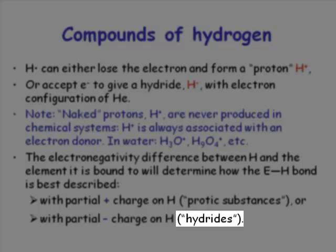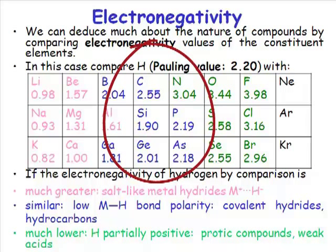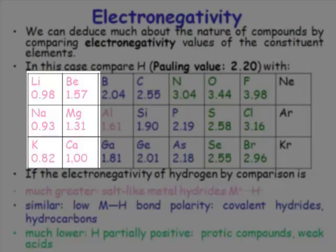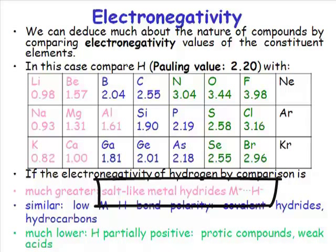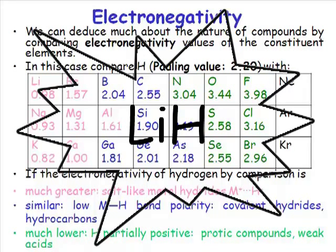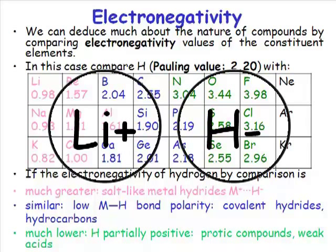Let's look at a table of electronegativities. Hydrogen with a Pauling value of 2.20 is right in the middle. If hydrogen is in combination with an element on the left of the periodic table, it's going to form what's known as a salt-like metal hydride. The electronegativity of hydrogen is much higher than lithium, so if you combine lithium and hydrogen, you will produce lithium hydride. Lithium hydride is so polarized it's essentially a salt with lithium cations and hydride anions.